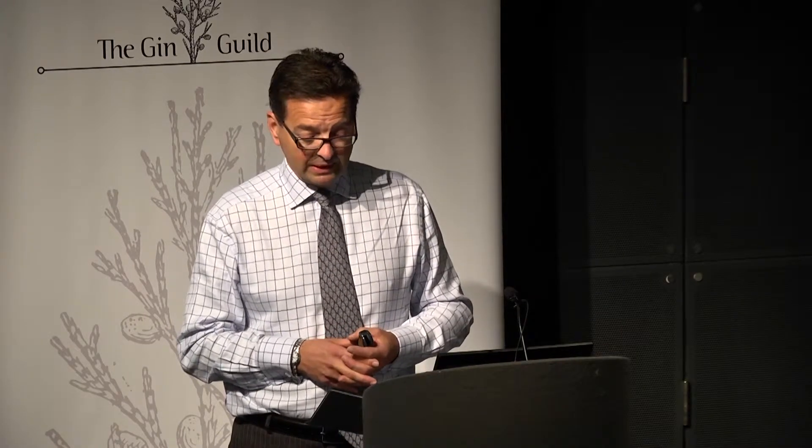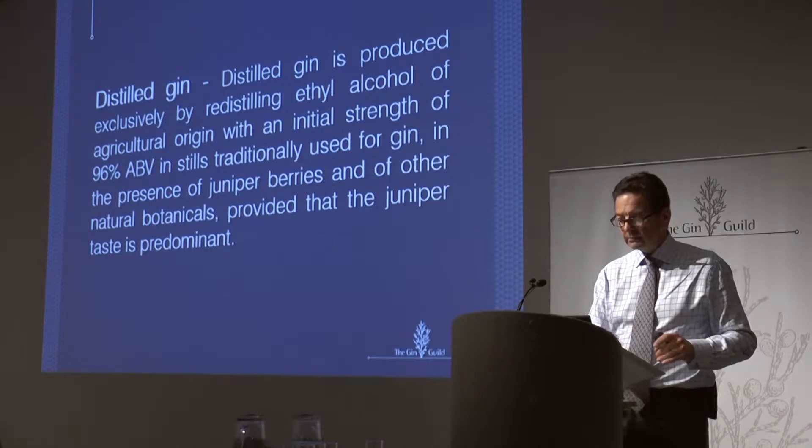We only allow distilled gins to join the Gin Guild, so a good rule is always to check that the gin you're going to buy is a distilled gin. The second category is distilled gin. This is produced exclusively by redistilling ethyl alcohol of agricultural origin with an initial strength of 96% ABV in stills traditionally used for gin — and it's worth noting that vacuum distillation apparently qualifies — in the presence of juniper berries and other natural botanicals, provided that the juniper taste is predominant.